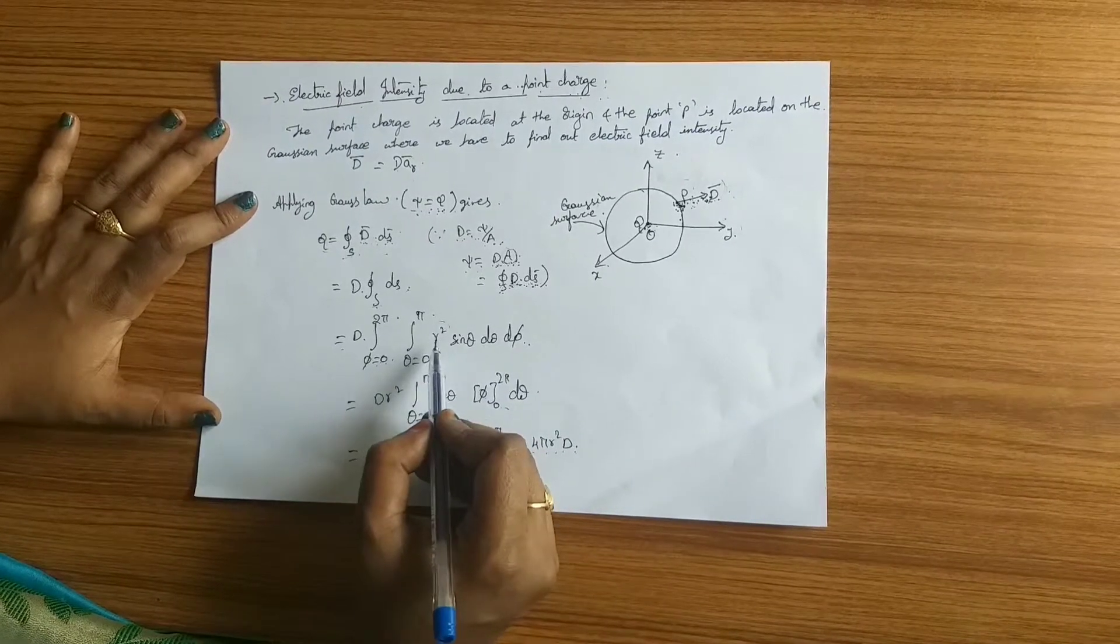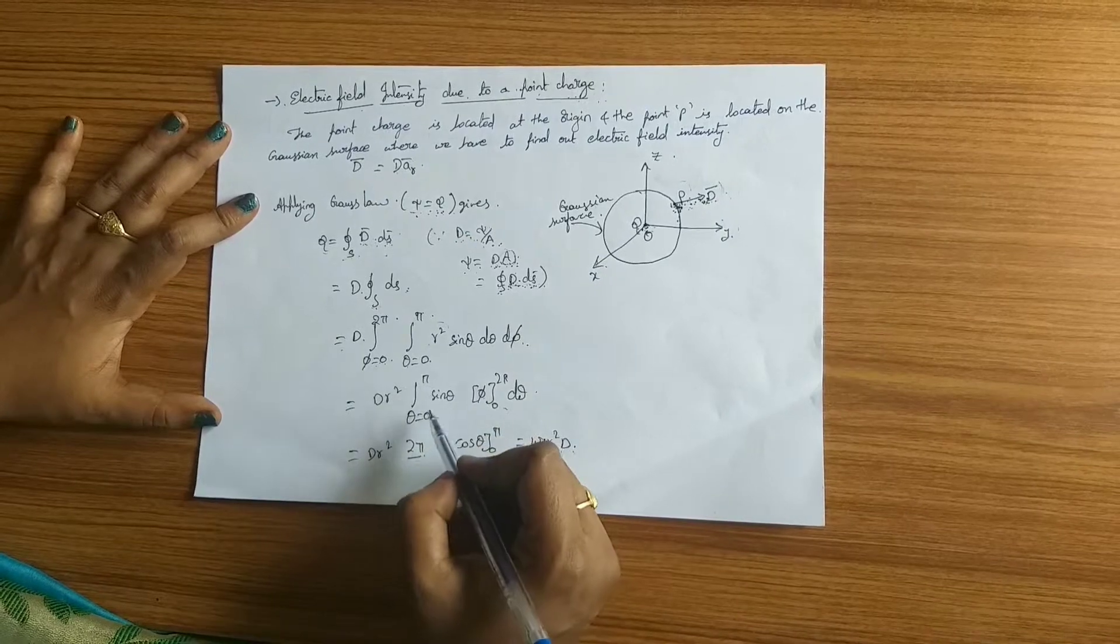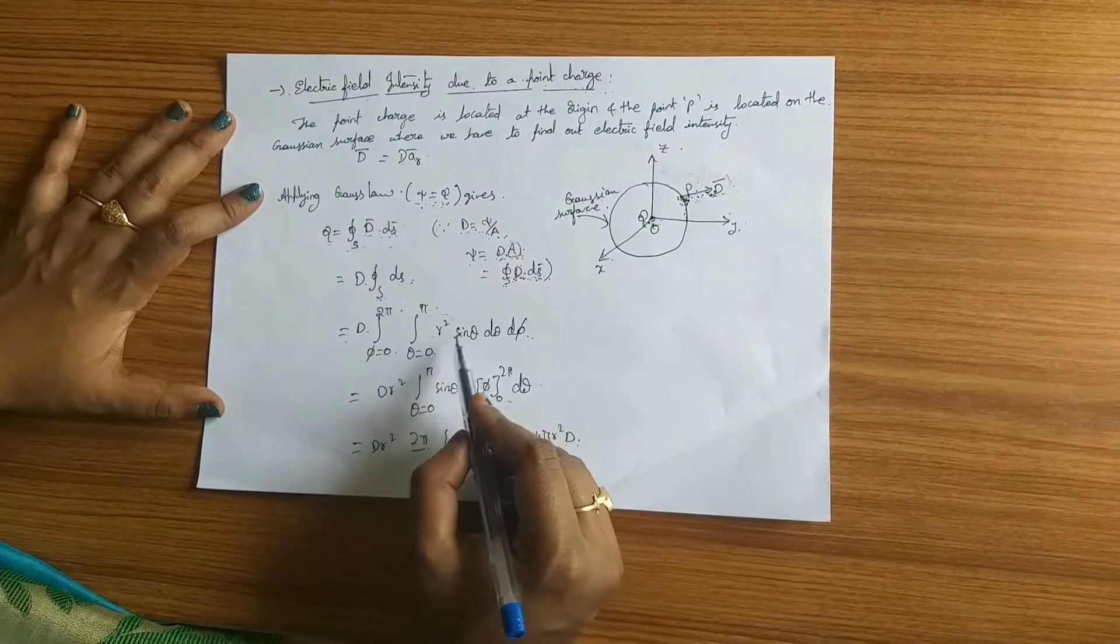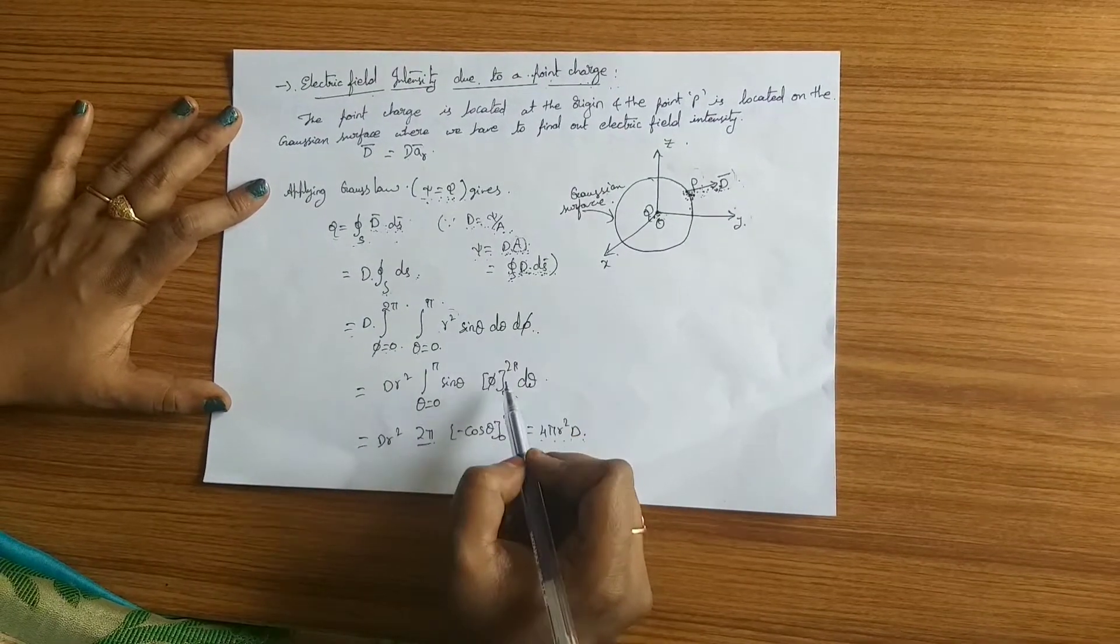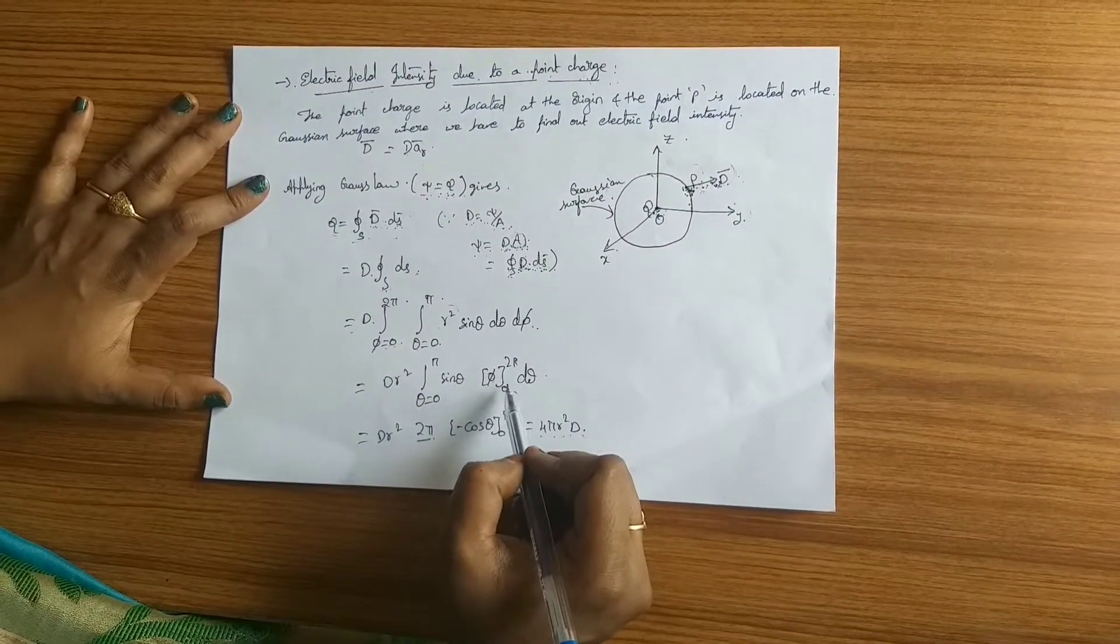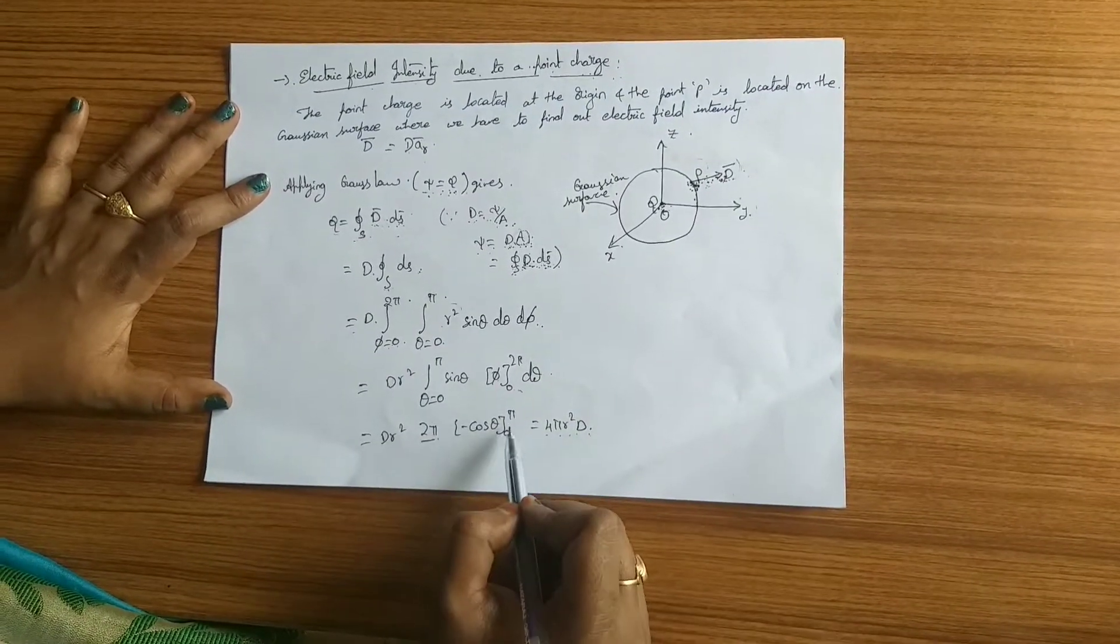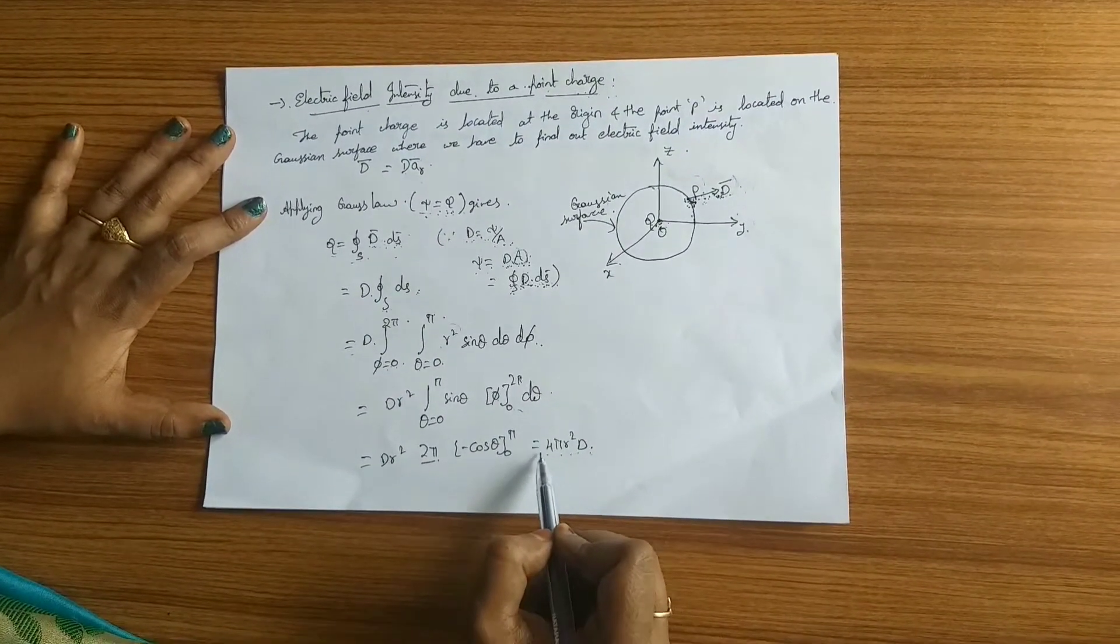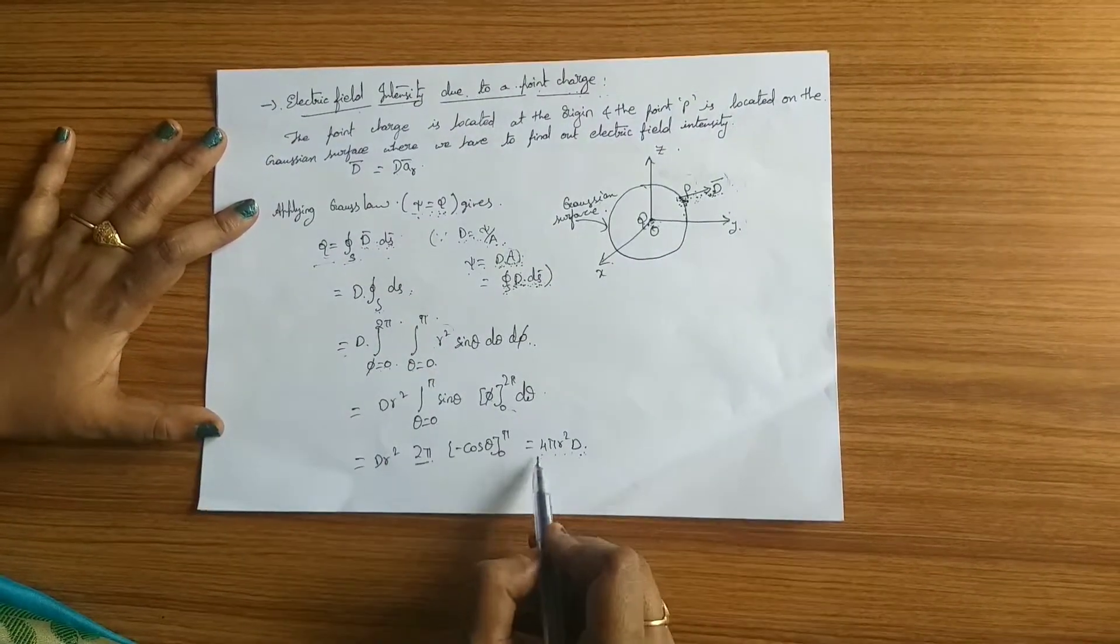Now as radius is constant, it is kept outside of the integral, and applying the integration to theta with the limits, the final expression can be written as 4π r squared d. That is, q equals 4π r squared d.